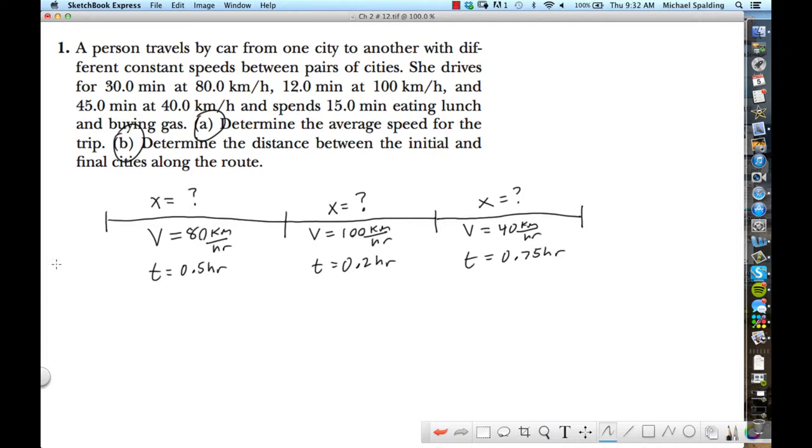question A and question B should be in reverse order because, okay, how many of you realize this? Like, you can't get question A without first doing B. So really, it should be B, then A. So let's do B first. B wants the distance between the initial and the final cities along the route. So basically, we want the total distance traveled by this car, okay? Can we do this in one calculation, or does it have to be multiple? Multiple.